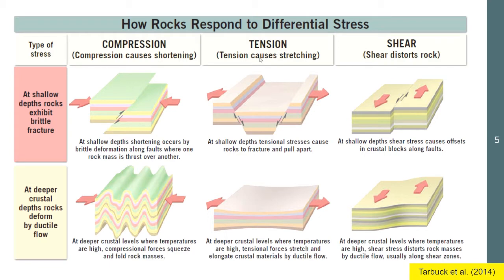Tension is quite the opposite of compression — it's stretching, being pulled apart. If tension stretches the rock mass and it occurs at shallow depths near the Earth's surface, it causes the rocks to fracture and be pulled apart. Stretching on both sides causes the middle part of the rock slab to descend deeper into the Earth's surface.